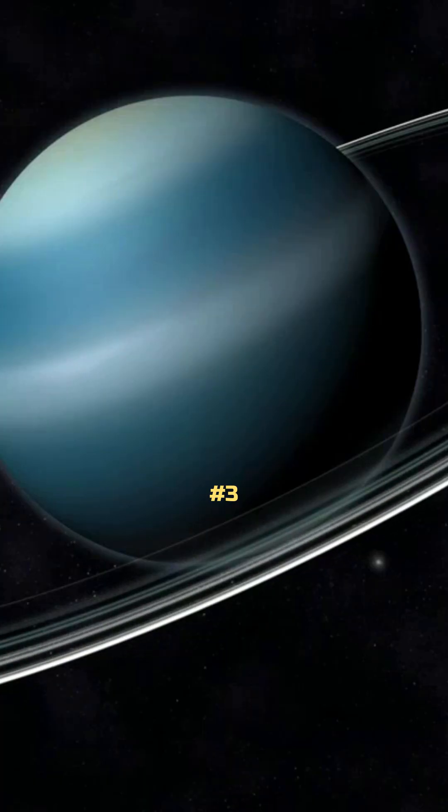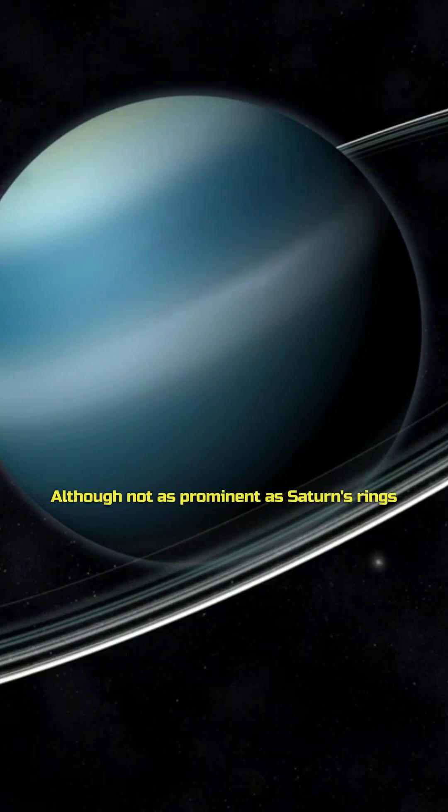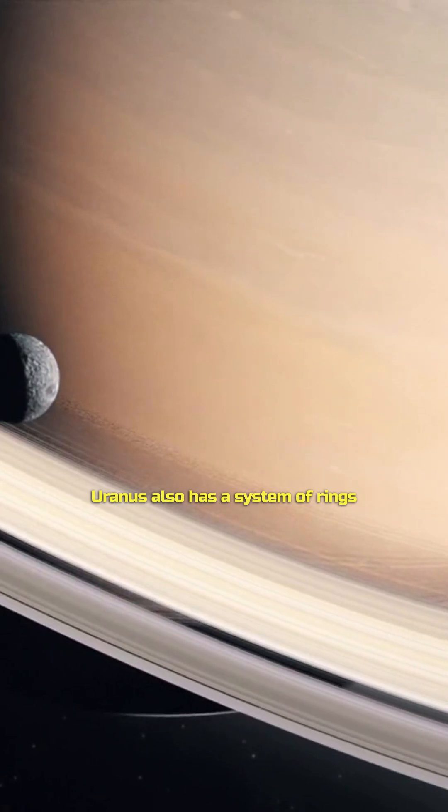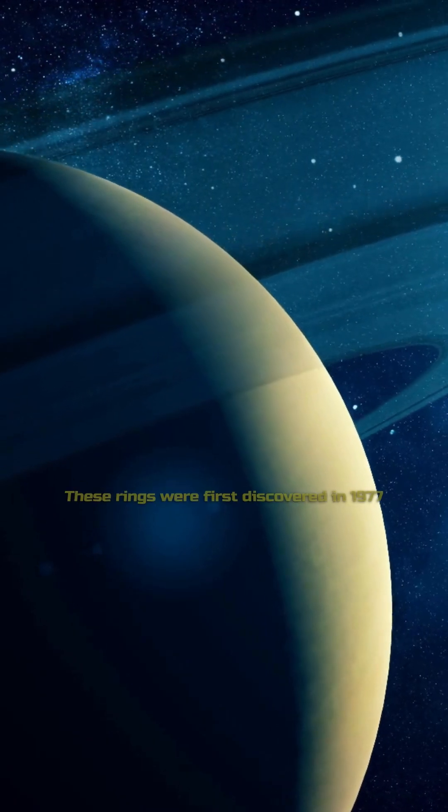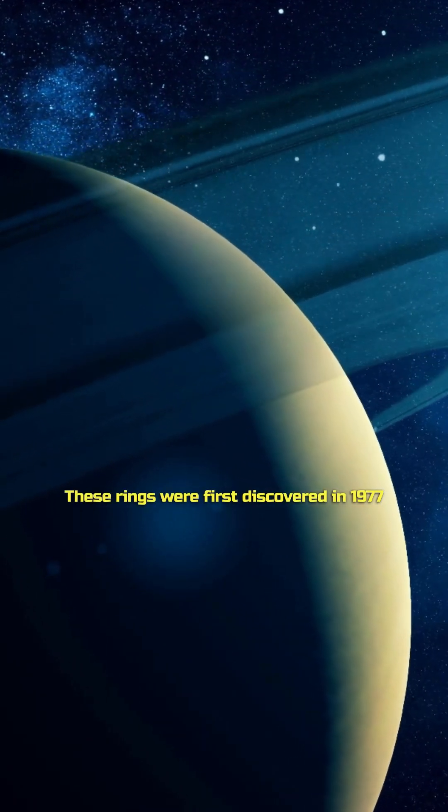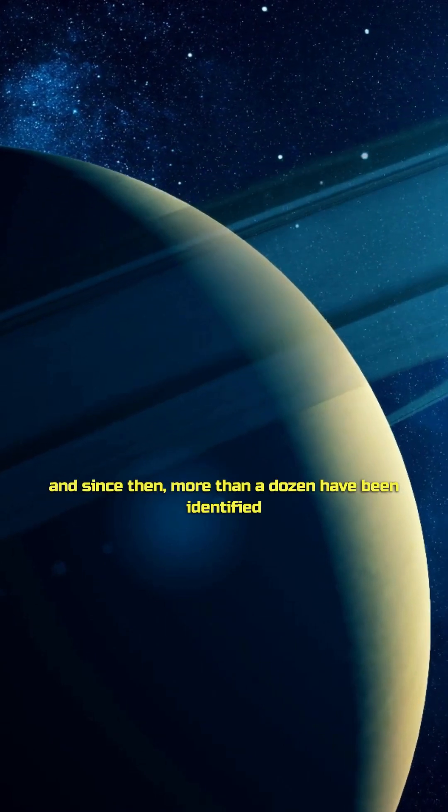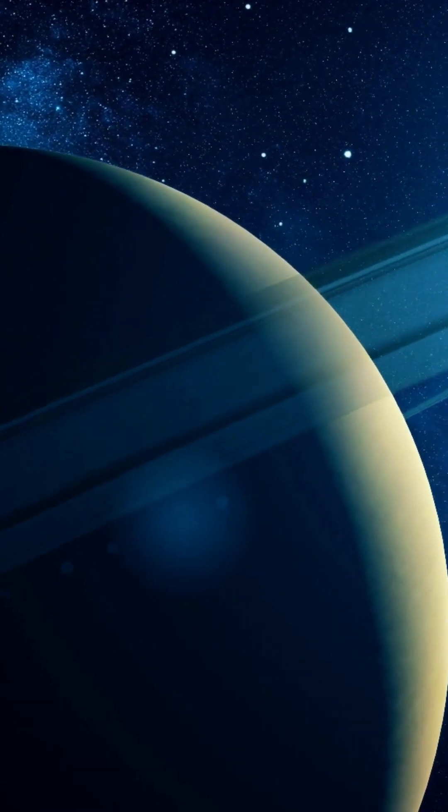Number 3. Uranus has a system of rings. Although not as prominent as Saturn's rings, Uranus also has a system of rings. These rings were first discovered in 1977, and since then, more than a dozen have been identified.